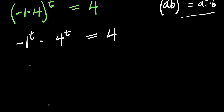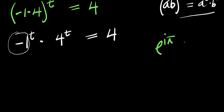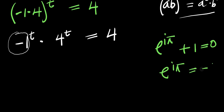From here, we can replace this negative 1 with something else. Let's consider Euler's identity: if you have e to the power of i times pi, then you have plus 1, and this equals 0. So from here, e to the power of i times pi equals negative 1. That means negative 1 here equals e to the power i times pi.